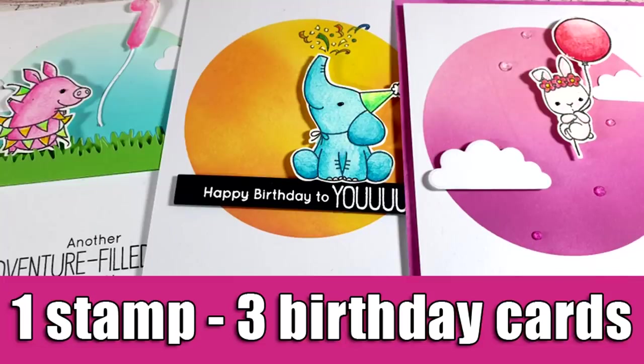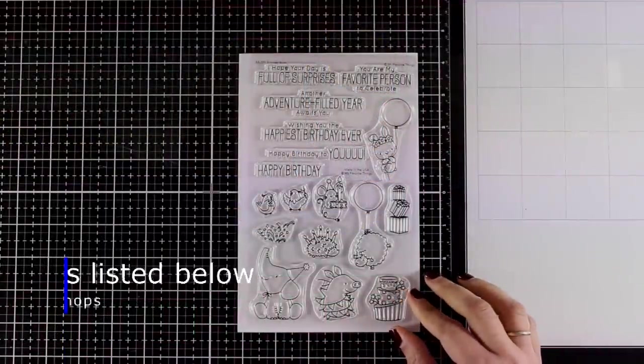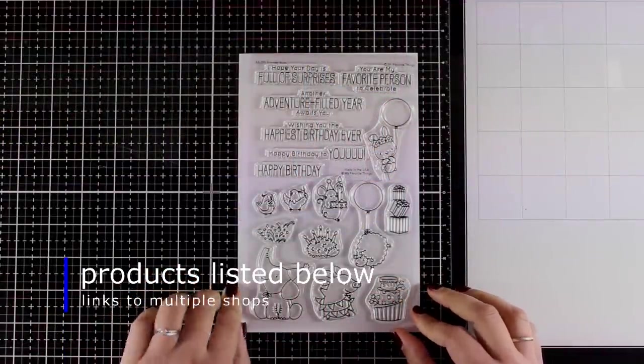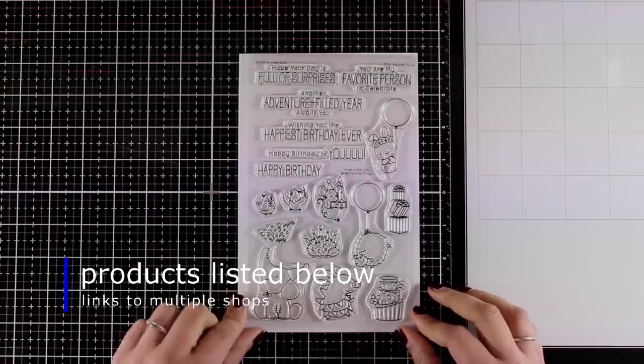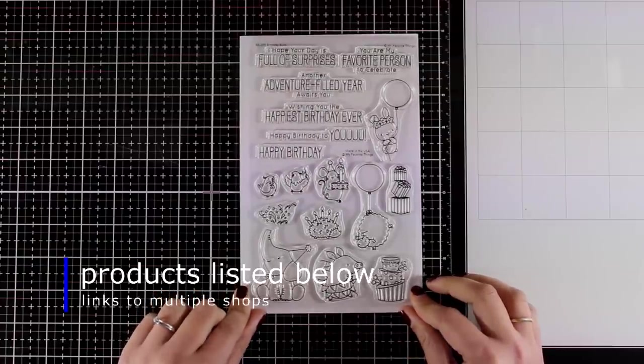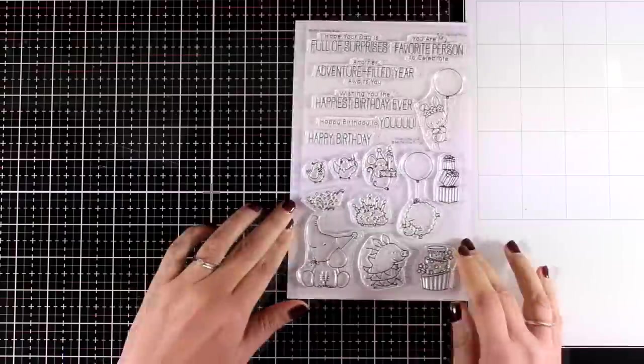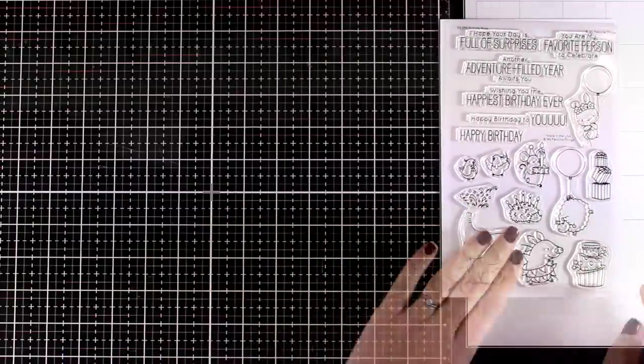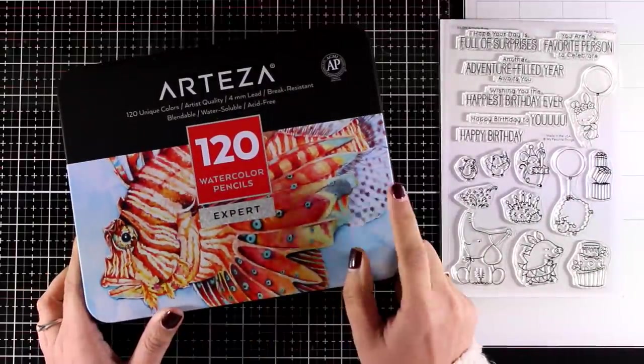Hi everyone and welcome back to another card making video. Today I will be using one of my favorite stamp sets from the latest My Favorite Things release, the Birthday Badge. I will use just this stamp set and pretty much the same design to create three different birthday cards. For all my coloring today, I decided to use my Arteza watercolor pencils.